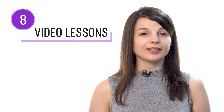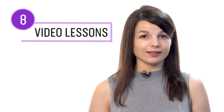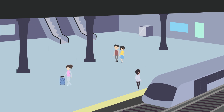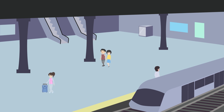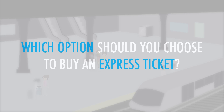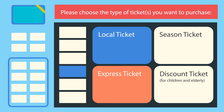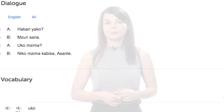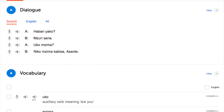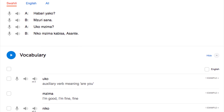Number eight: take the reading comprehension video lessons. These lessons are specifically designed to test your reading skills. You're presented with a real-life scenario, such as reading a sign at the train station, and are tested on the words presented on the screen. Don't worry, you get the answer at the end, and translations are available in the dialogue section.